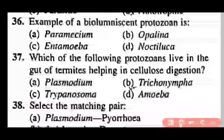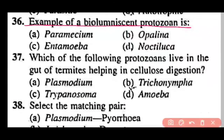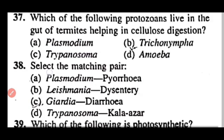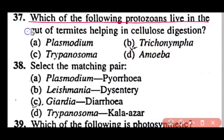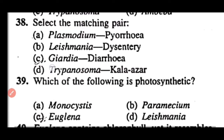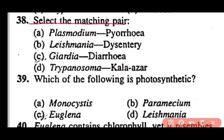Question 36: The example of a bioluminescent protozoan is Paramecium, Opalina, Amoeba, or Noctiluca? Correct answer is option D. Noctiluca is an example of a bioluminescent protozoan. Question 37: Which protozoan lives in the gut of termites and helps in cellulose digestion — Plasmodium, Trichonympha, Trypanosoma, or Amoeba? Correct answer is option B. Trichonympha lives in the gut of termites as a symbiont and helps in cellulose digestion.